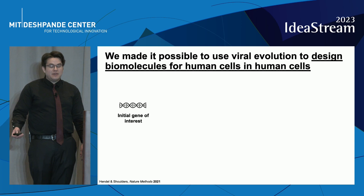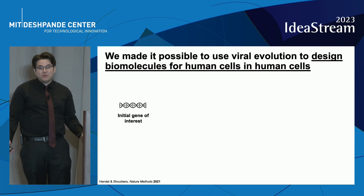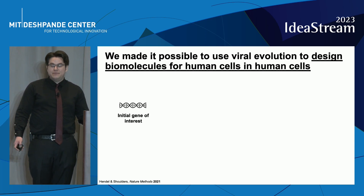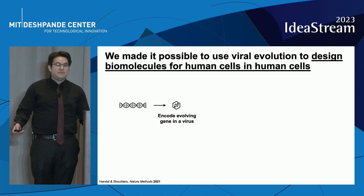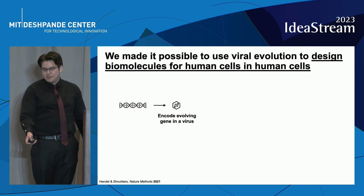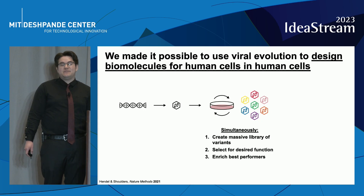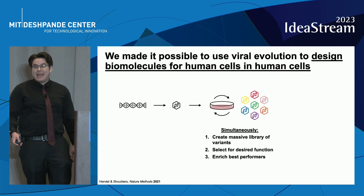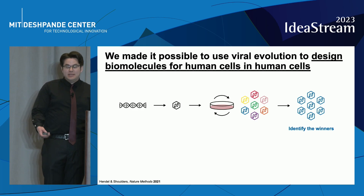What we discovered is we can co-opt the very fast process of viral evolution to allow for the design of medicinal biomolecules for human cells directly in human cells. In our system, we start with a biomolecule of interest and encode the gene for that biomolecule inside of a human virus. Upon infection of human cells, we simultaneously create a massive library of variants, select for our desired medicinal function, and enrich the best performers, which ultimately allows us to identify the winners.